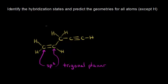Let's move to this carbon right here. That carbon has only single bonds around it. The fast way of doing it: if you see all single bonds, it must be sp3 hybridized. If that carbon is sp3 hybridized, we know the geometry is tetrahedral geometry with ideal bond angles of 109.5 degrees around that carbon.